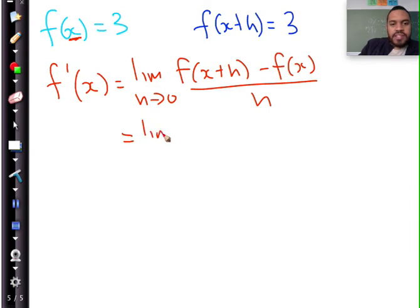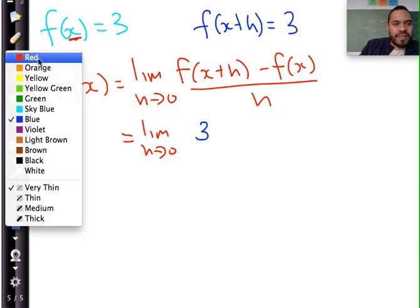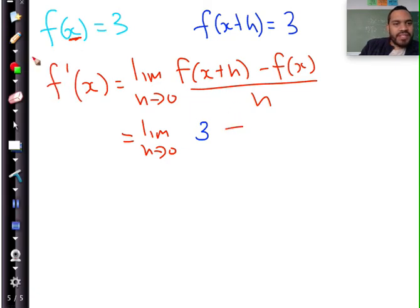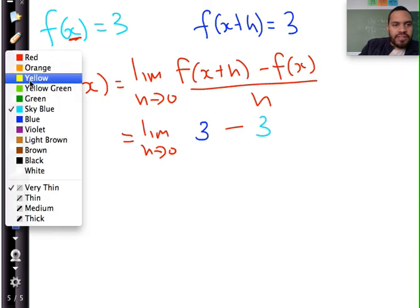So this is equal to the limit as h tends to 0. Now do you see f of x plus h? I'm going to replace that with a blue curve, you see? Just so you guys can see the relationship. Okay, minus. And this I'm going to replace with sky blue. Divided by h.